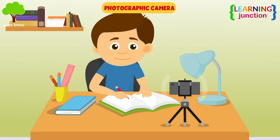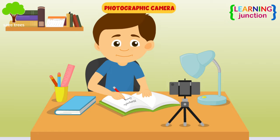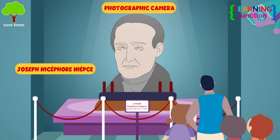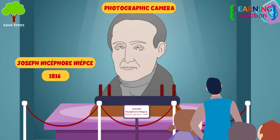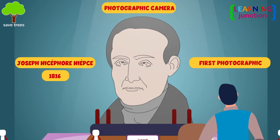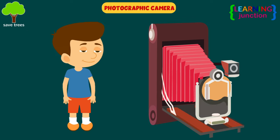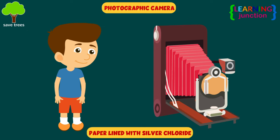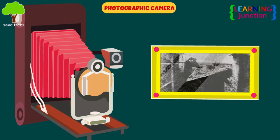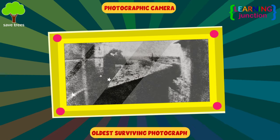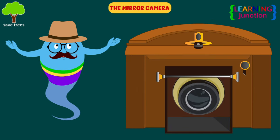You're learning about the photographic camera on your mobile — show it to your friends. This is a statue of Frenchman Joseph Nicéphore Niépce. In 1816, he invented the first photographic camera. Joseph developed photographic images onto paper lined with silver chloride, and a photograph he produced in roughly 1826 stands as the oldest surviving photograph.